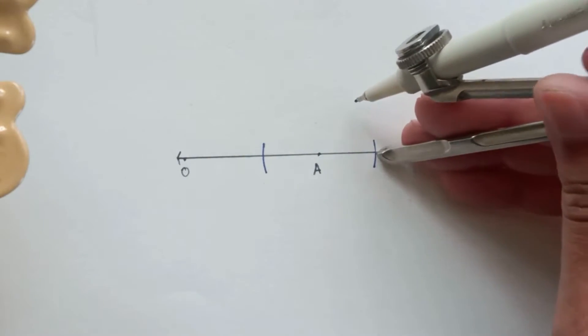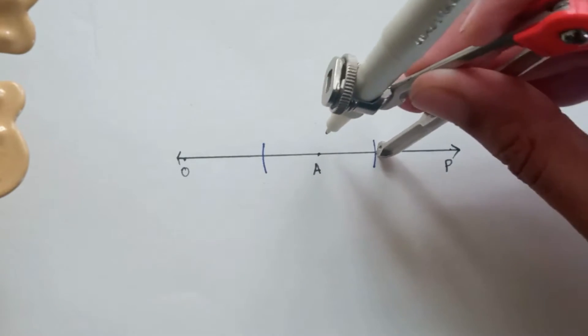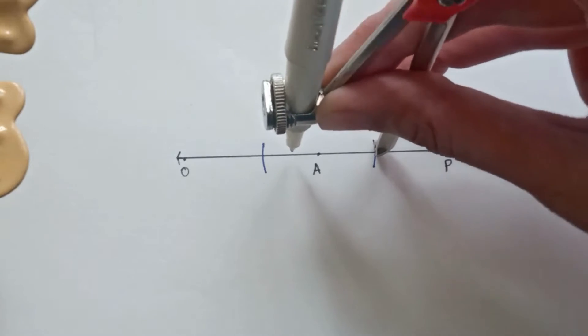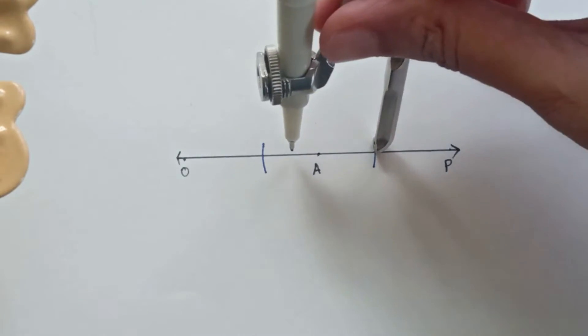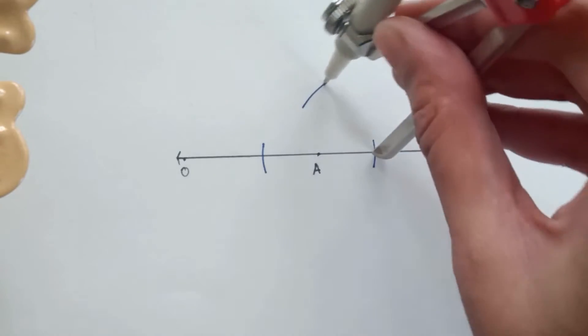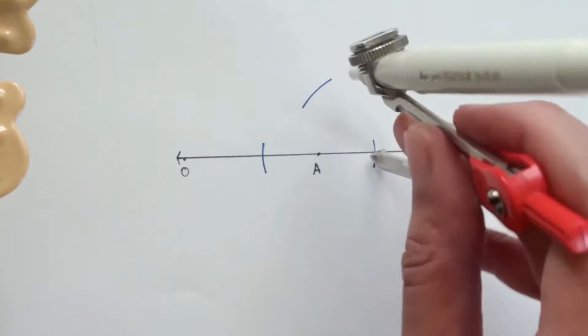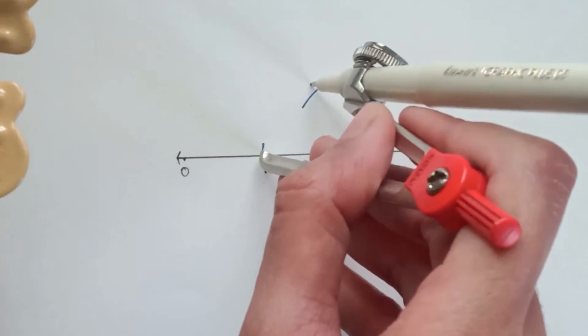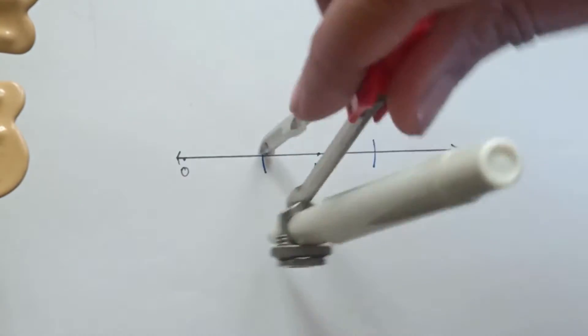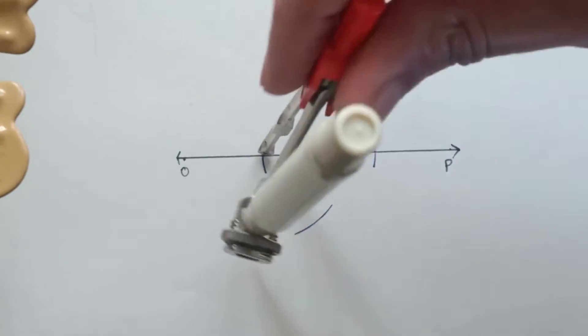Put the pointer on A, take any amount of distance in the compass and mark two arcs on line. Then put this pointer on one of the arcs, increase the length a little bit ahead of A and mark intersecting arcs from both the points.